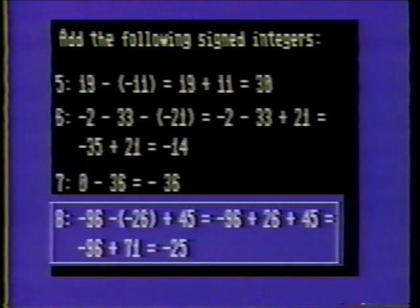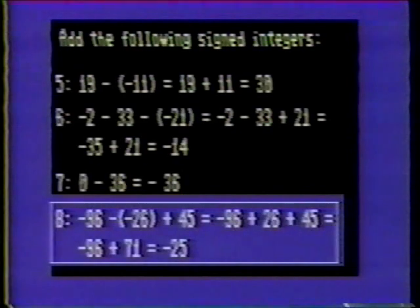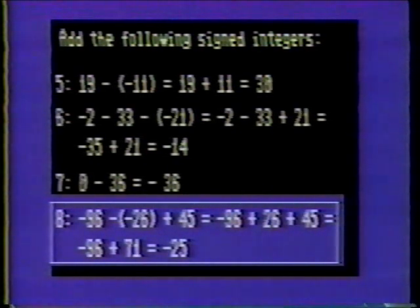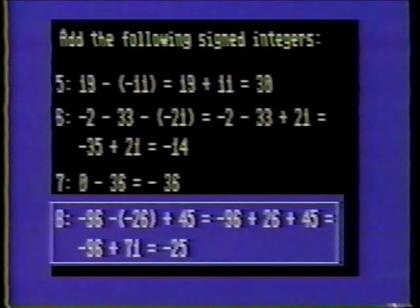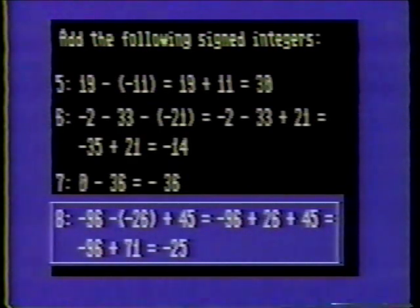Negative ninety-six minus negative twenty-six plus forty-five. Remember, minus and minus yields a positive. Thus, minus negative twenty-six is positive twenty-six. The problem now reads negative ninety-six plus twenty-six plus forty-five. First, combine the numbers with like signs. Twenty-six plus forty-five is seventy-one. Negative ninety-six plus seventy-one is negative twenty-five.